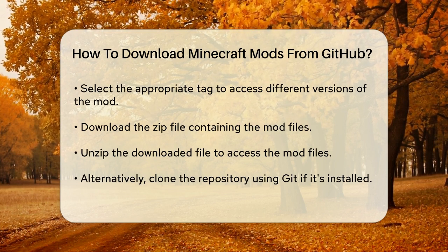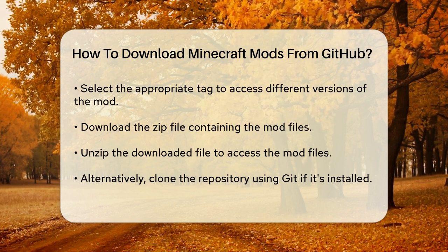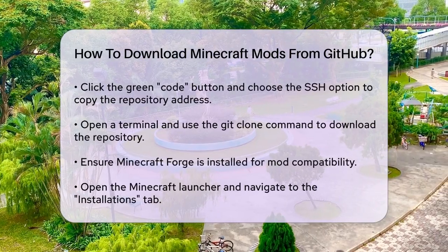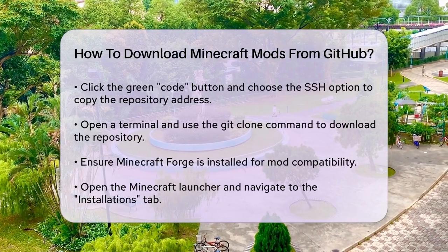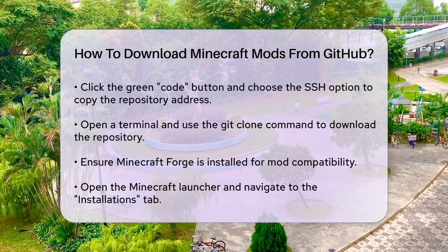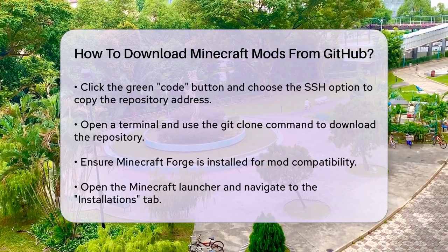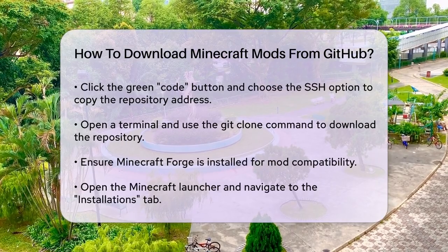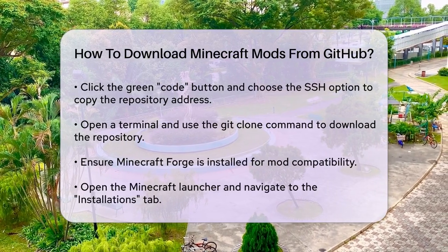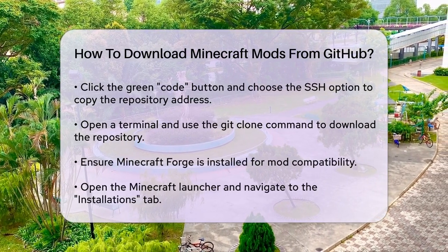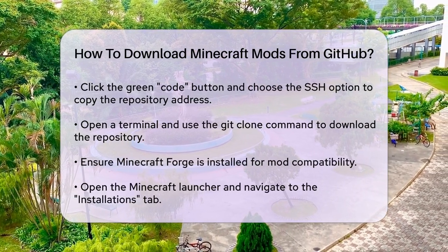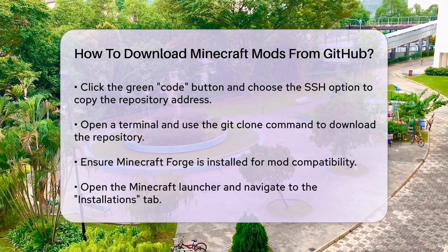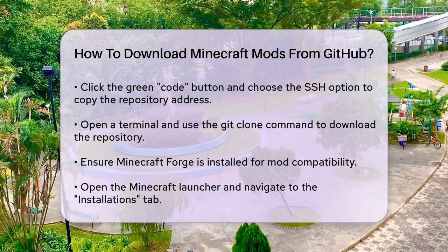Another method is cloning the repository using Git, but this requires you to have Git installed on your machine. If you do, go to the top-level directory of the project, click the green code button, choose the SSH option, and copy the repository address. Open a terminal on your computer, change to the directory where you want to keep the project, and use the Git clone command followed by the repository address.